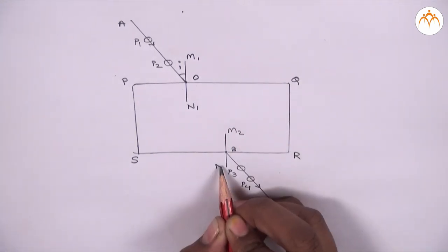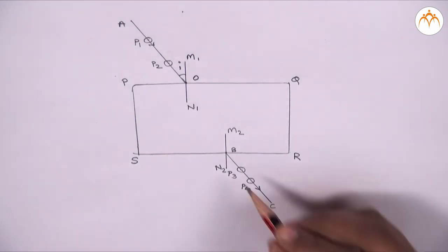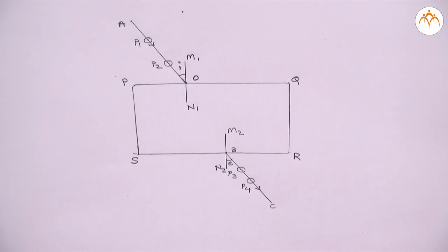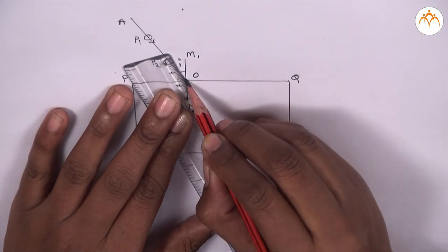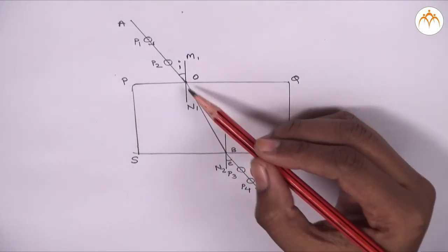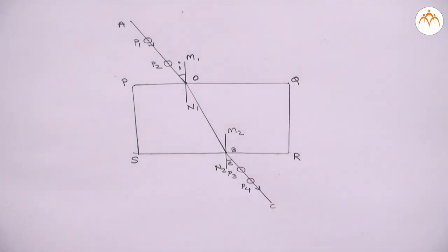The angle between BC and M2 N2 is called angle of emergence. We have to measure this angle also and write it down. Join point O and B. Ray OB is actual path of ray through glass slab.